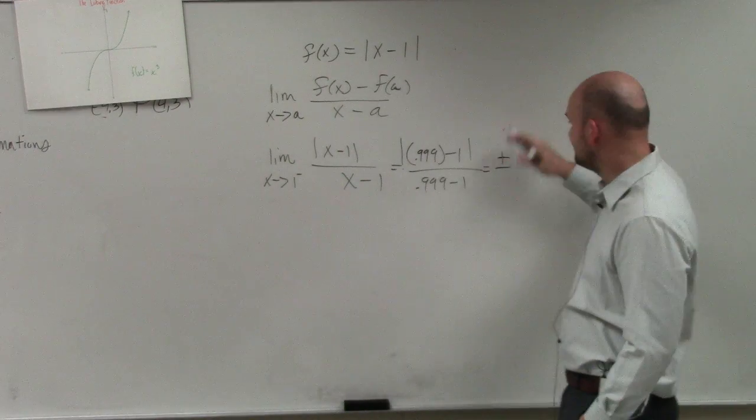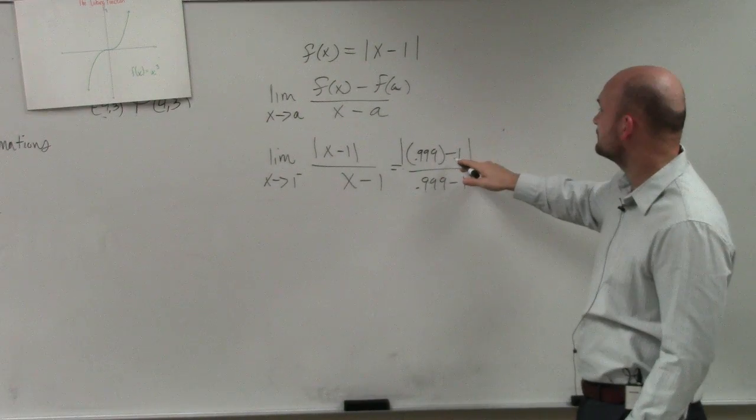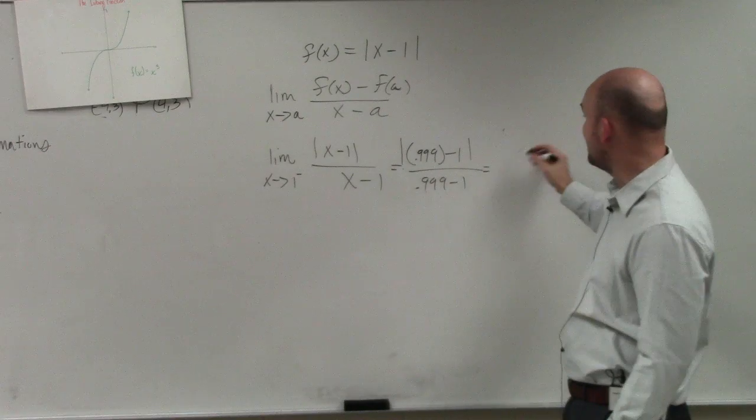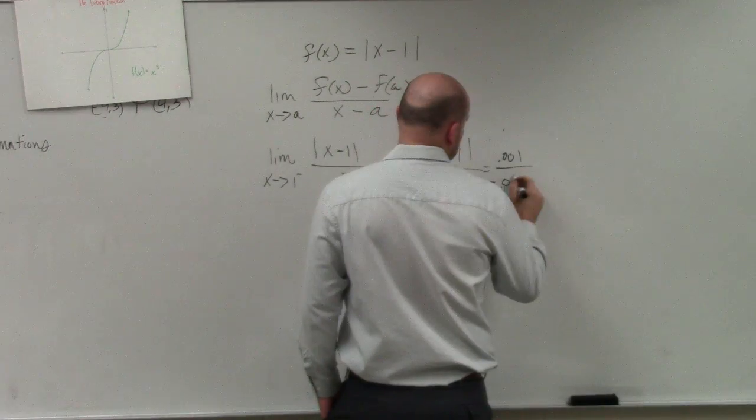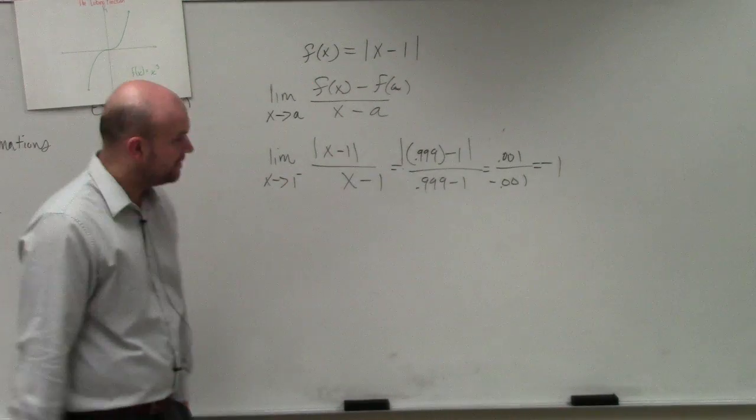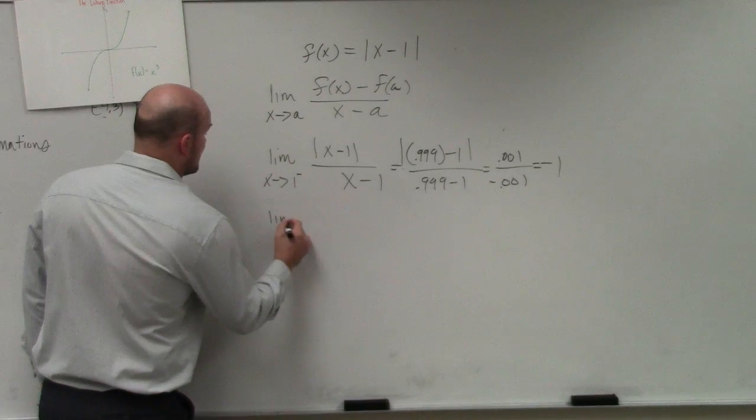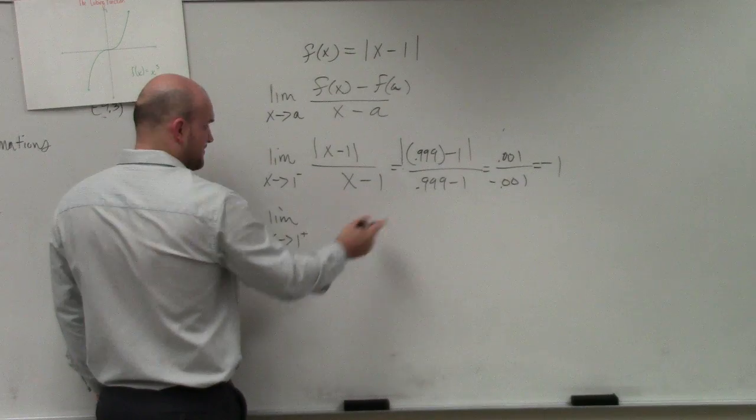Actually, forget about it. These are the same, but we can actually figure out these values. That's going to be a 0.001, but it's going to be a positive. This would be a negative 0.001. So you can actually see the derivative is negative 1. So if we check on the right-hand side, as x approaches 1 to the positive, we're going to get the same exact derivative.